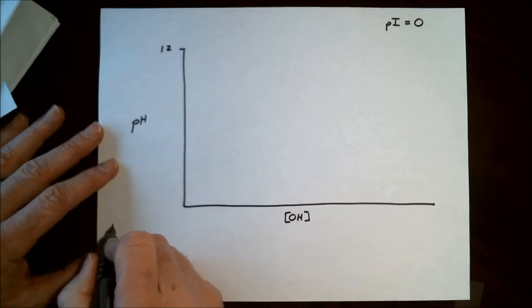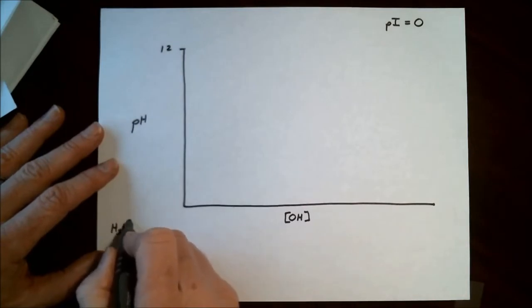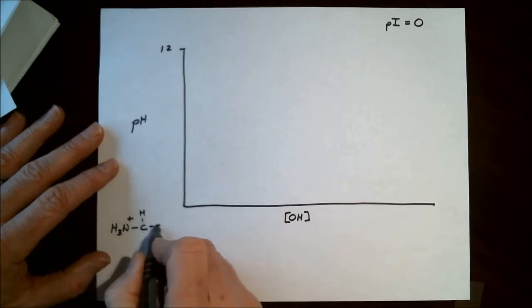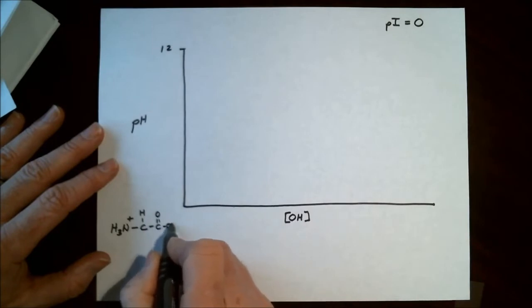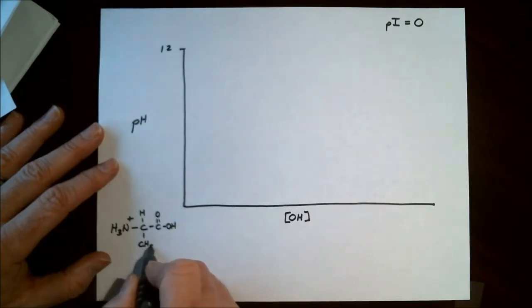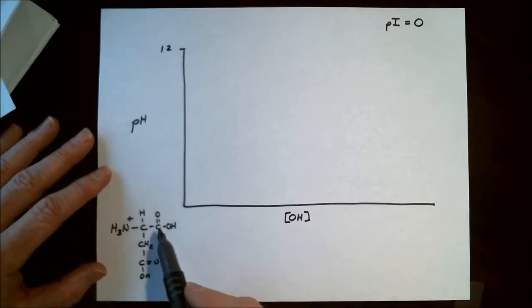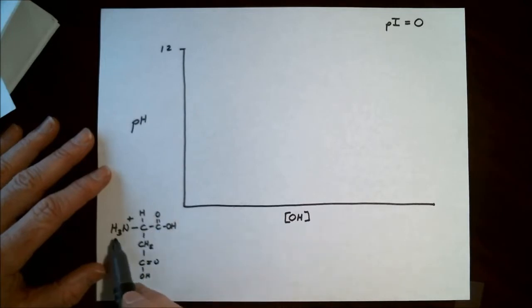Now at very low pHs, under acidic conditions, we are going to see the aspartic acid is going to be fully protonated. So all three functional groups will be protonated under these conditions. So the charge on this particular structure, the carboxylic acids are neutral. The primary amine has a plus one charge. So the overall charge is plus one.